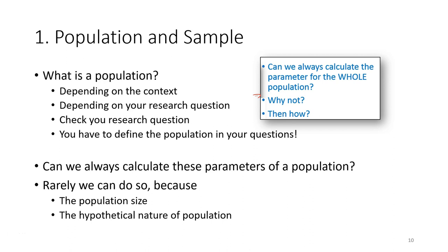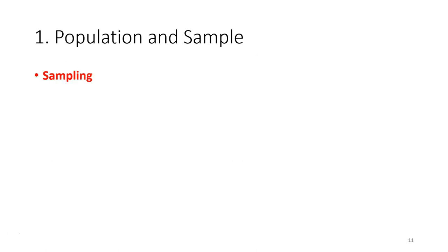It is not possible to calculate the parameter for a population when the population size is very large. Another issue is the hypothetical nature of population — for example with an experimental population, it's impossible to see the effect of a drug on the entire population, especially if the drug is still in the testing stage and it would be unethical to do so. In some cases we might also need to sacrifice living things to obtain measurements. That is why one way to address this problem is to do sampling.